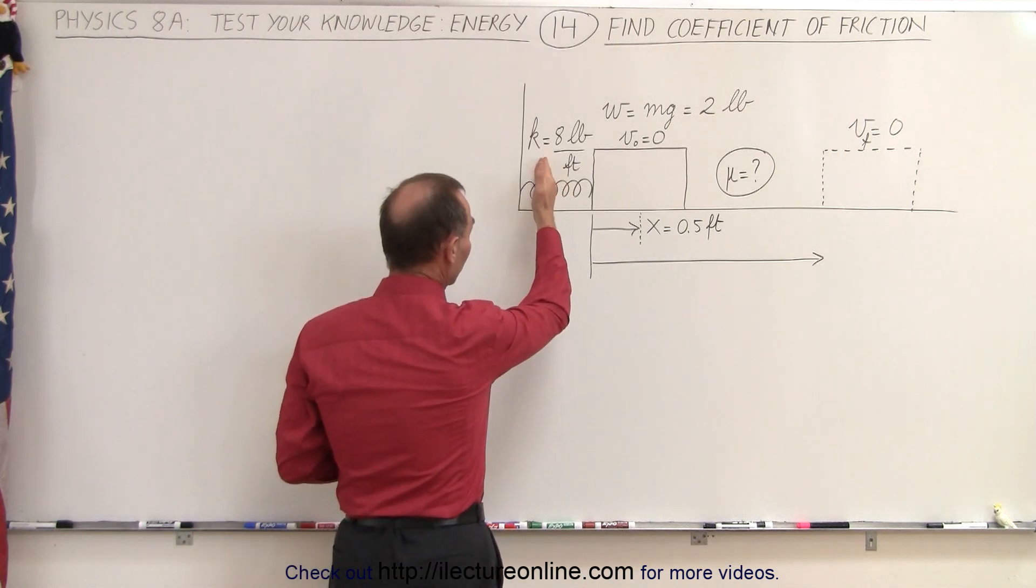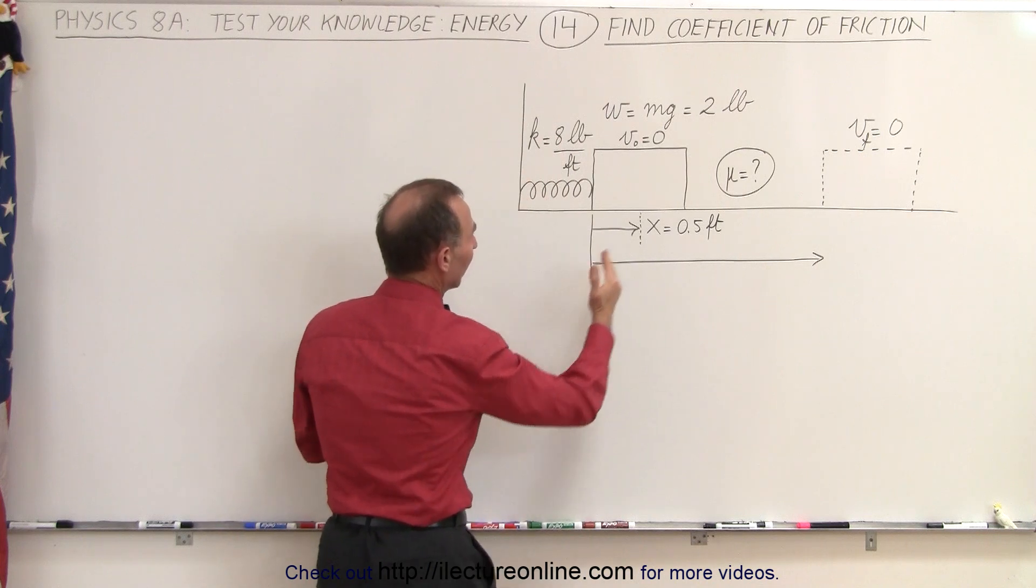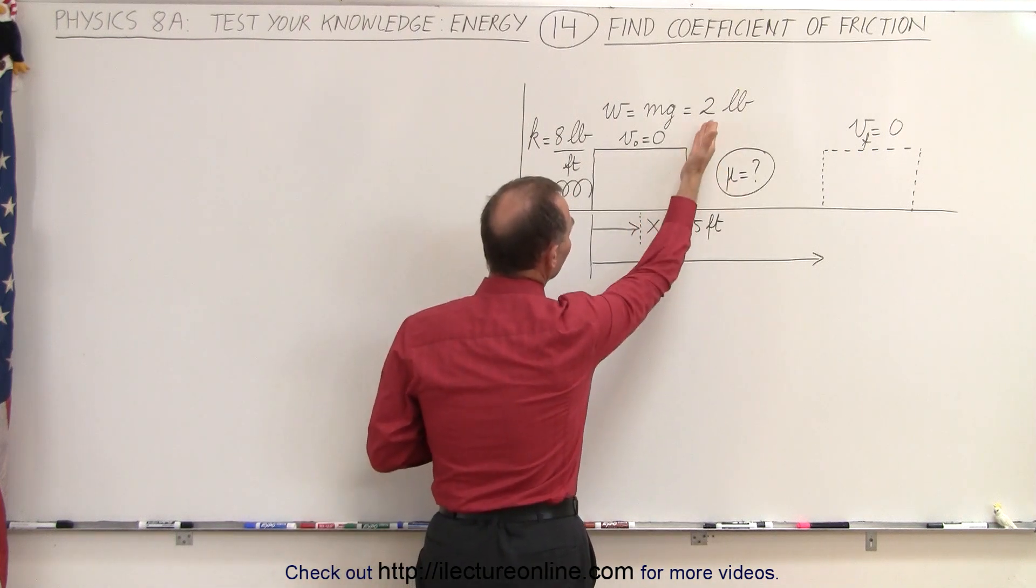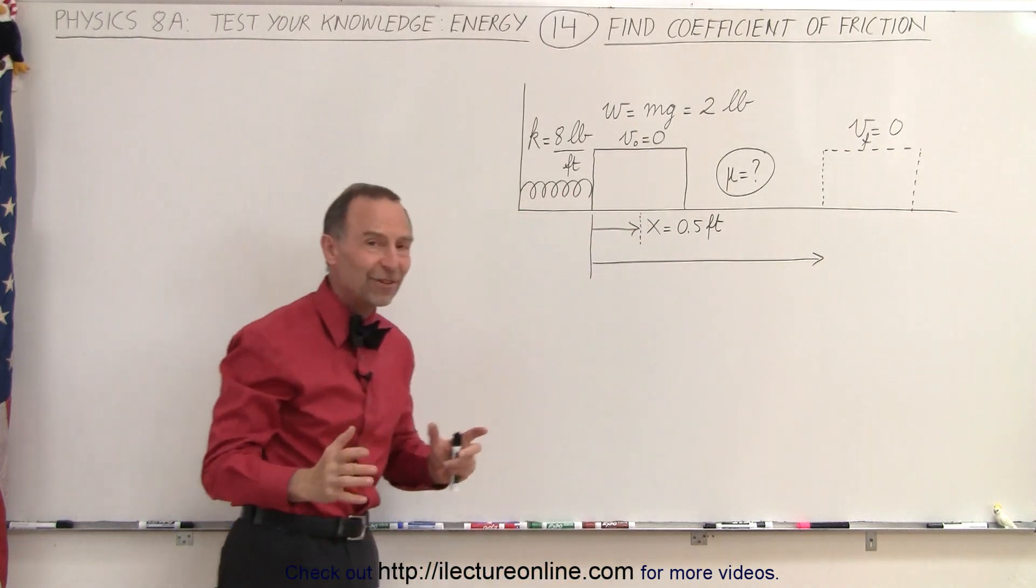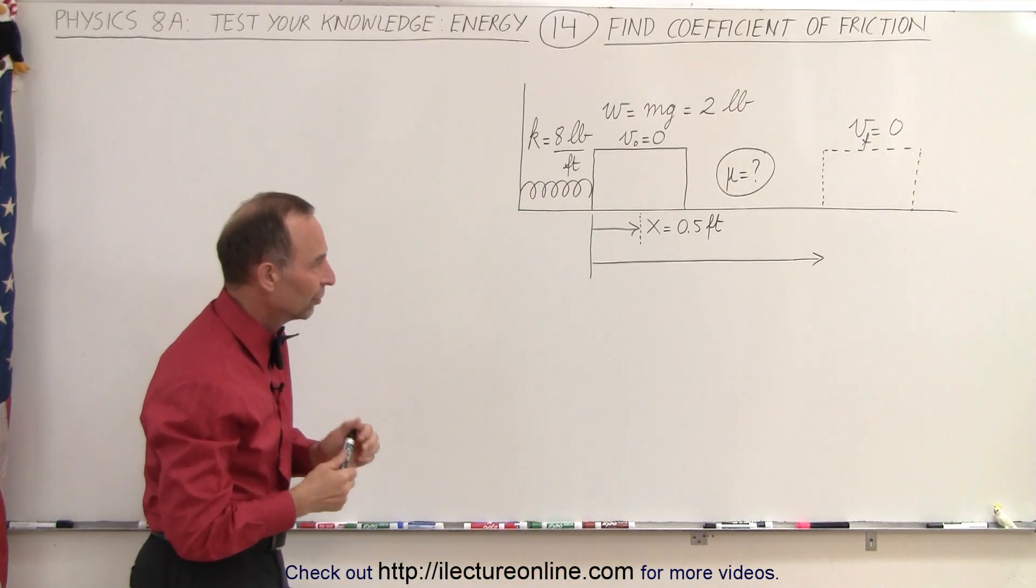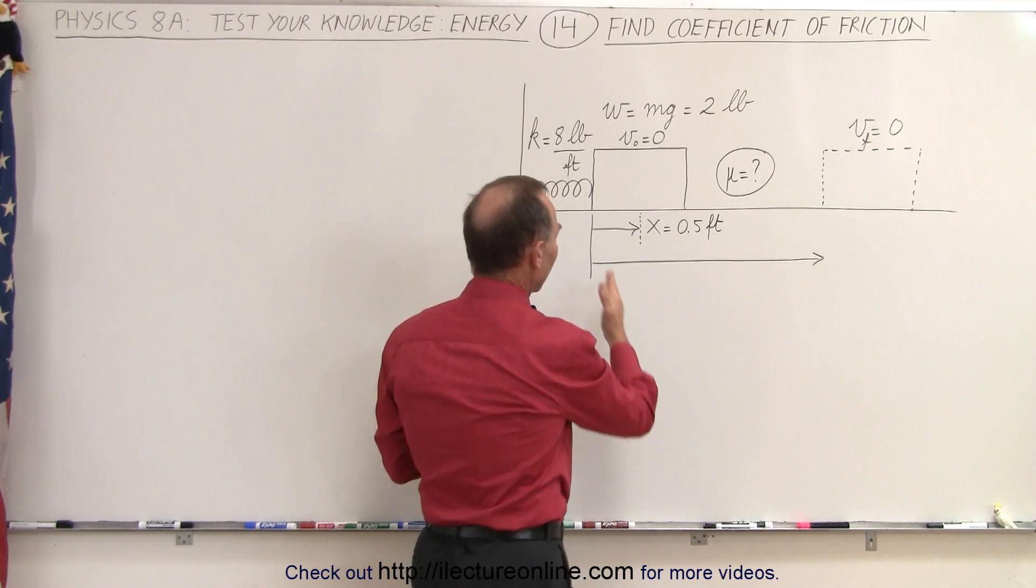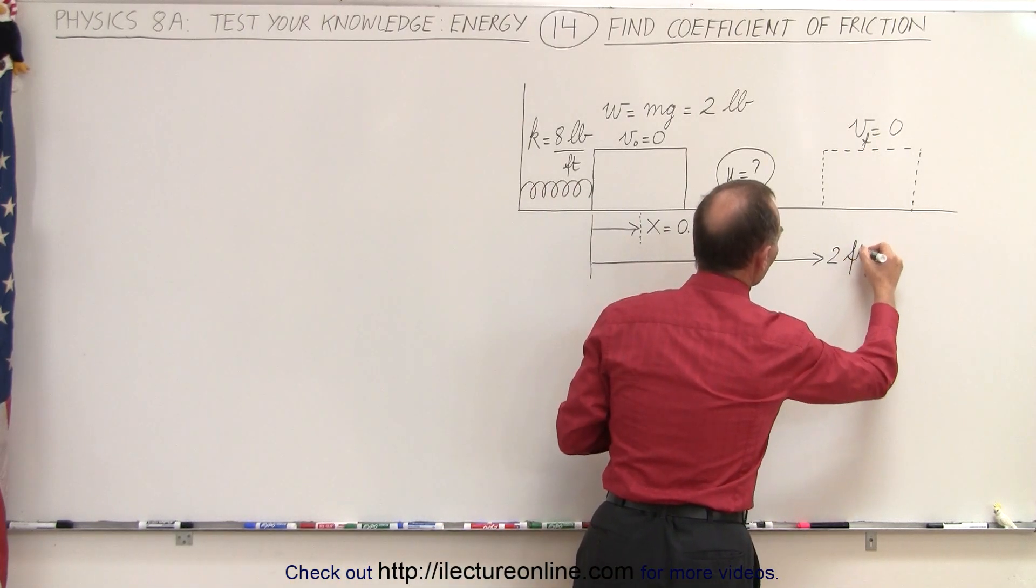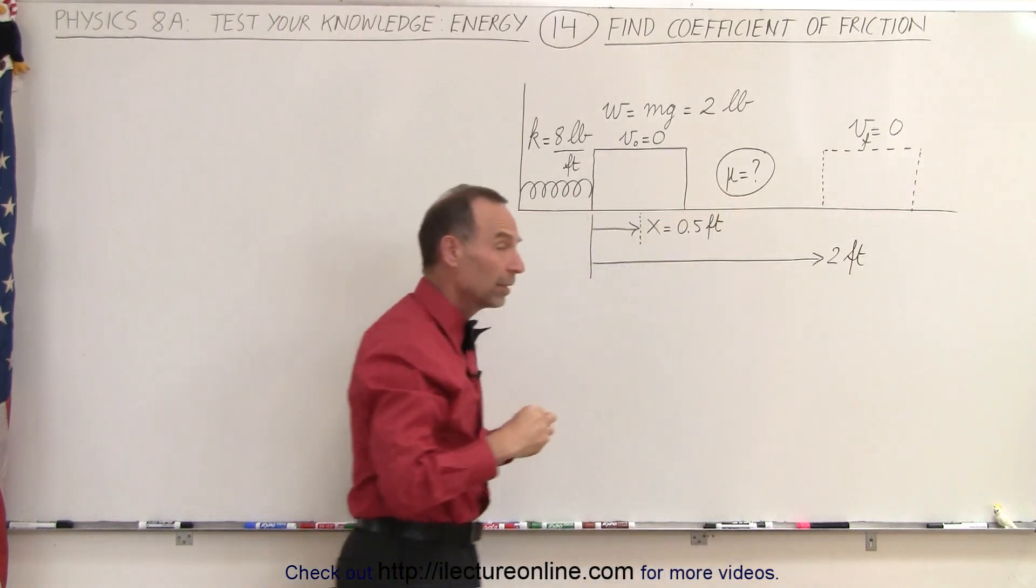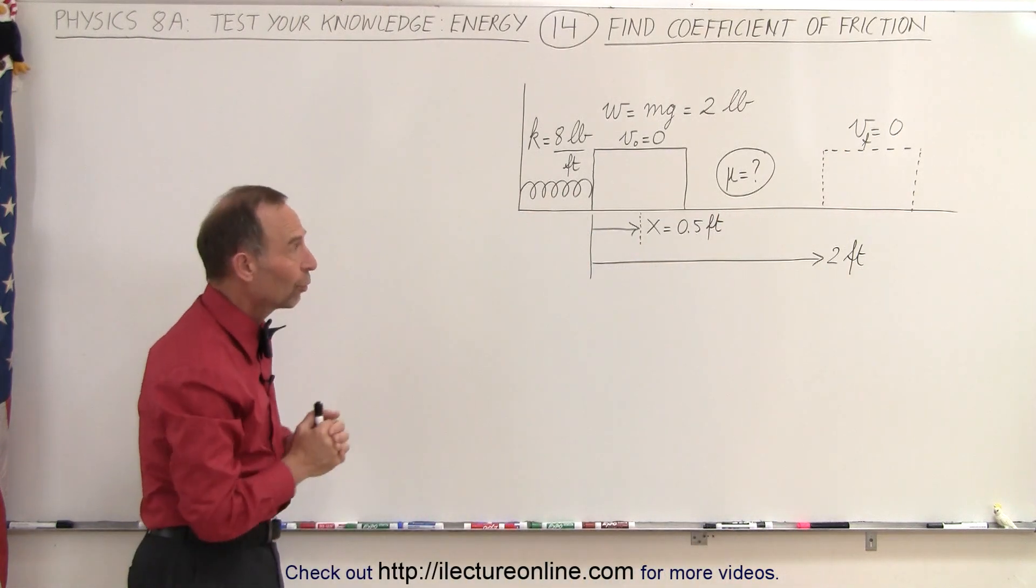We have a spring which has a spring constant of 8 pounds per foot and a block with a weight of 2 pounds pushed against it a distance of 0.5 feet away from the equilibrium point. Now we let go and the block will slide a distance of 2 feet before it comes to stop. The question is what is the coefficient of friction?